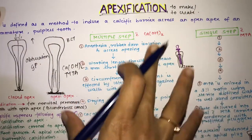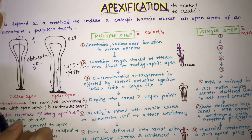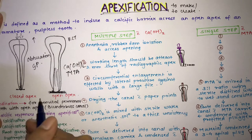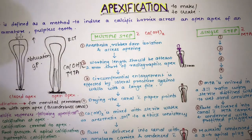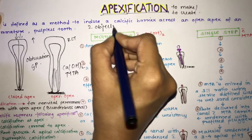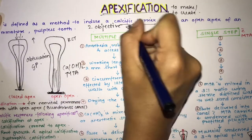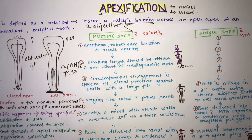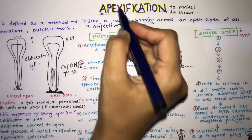The indication for apexification is non-vital permanent teeth with an open apex — that open apex tooth is also known as a blunderbuss canal. The two objectives of apexification are: first, creating a calcific barrier; and second, closing the open apical third of the root canal.